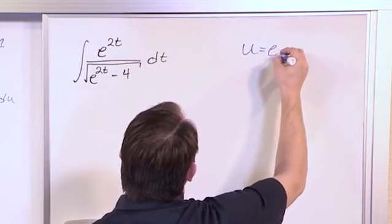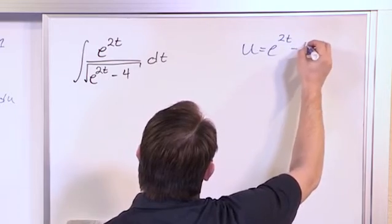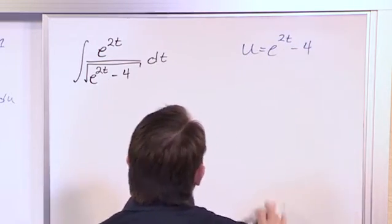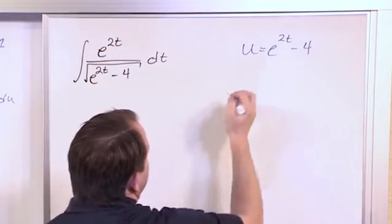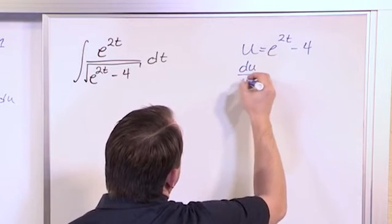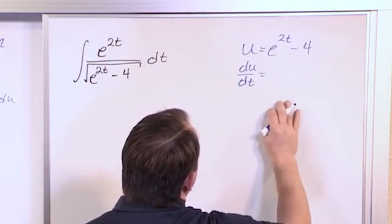So if we do u is equal to e to the 2t minus 4, which is basically what's down here under this radical, then du dt would be equal to what?